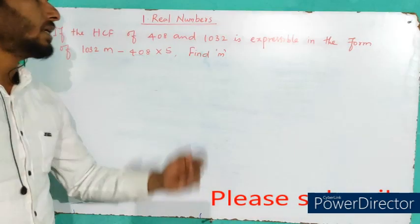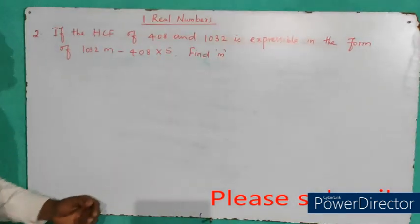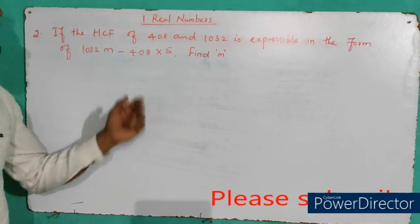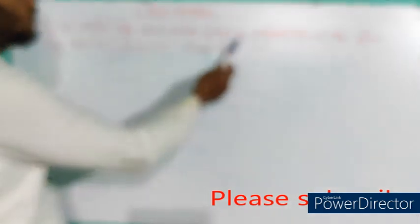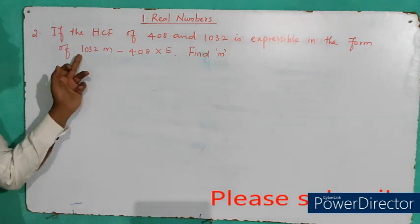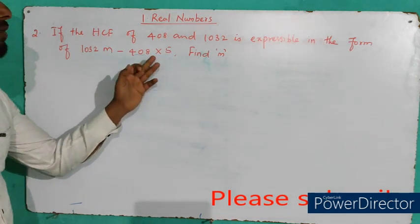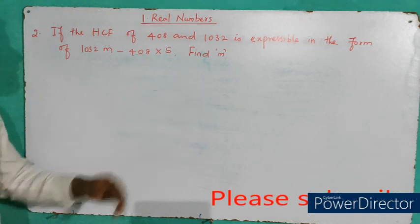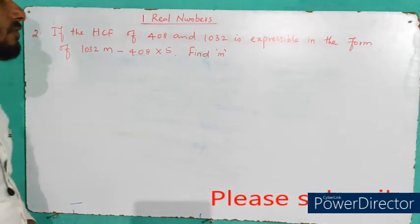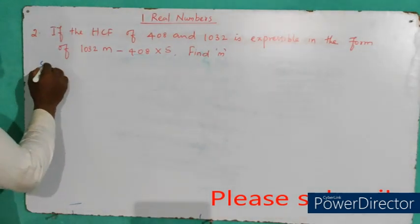Here is the second important question from the first half: if the HCF of 408 and 1032 is expressible in the form 1032 × m − 408 × 5, then find the value of m. This is the second most important question in the first half.